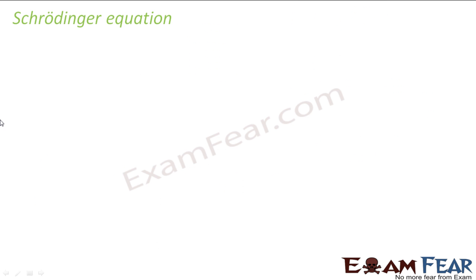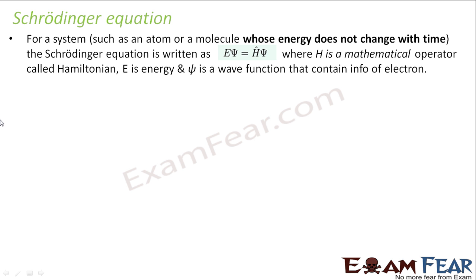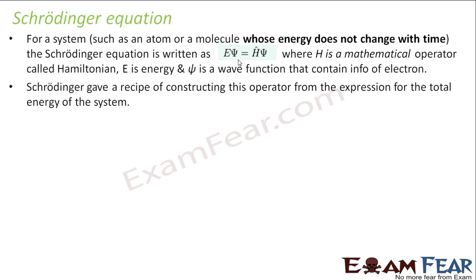Now let us discuss Schrödinger equation. Schrödinger has given an equation that is E psi is equal to Hamilton psi. E psi is equal to Hamilton psi where psi is nothing but a wave function. Hamilton is the mathematical operator and E is the energy. And this is for the atoms whose energy does not change with time. He gave a whole new mathematics to work on this function.